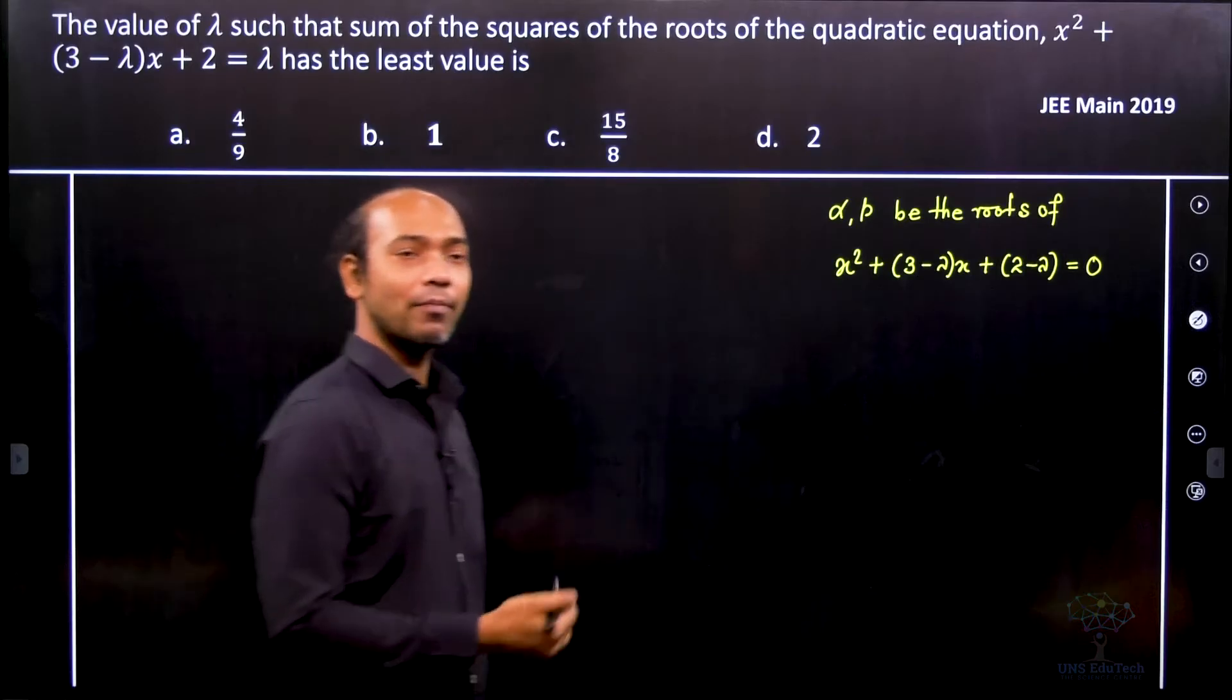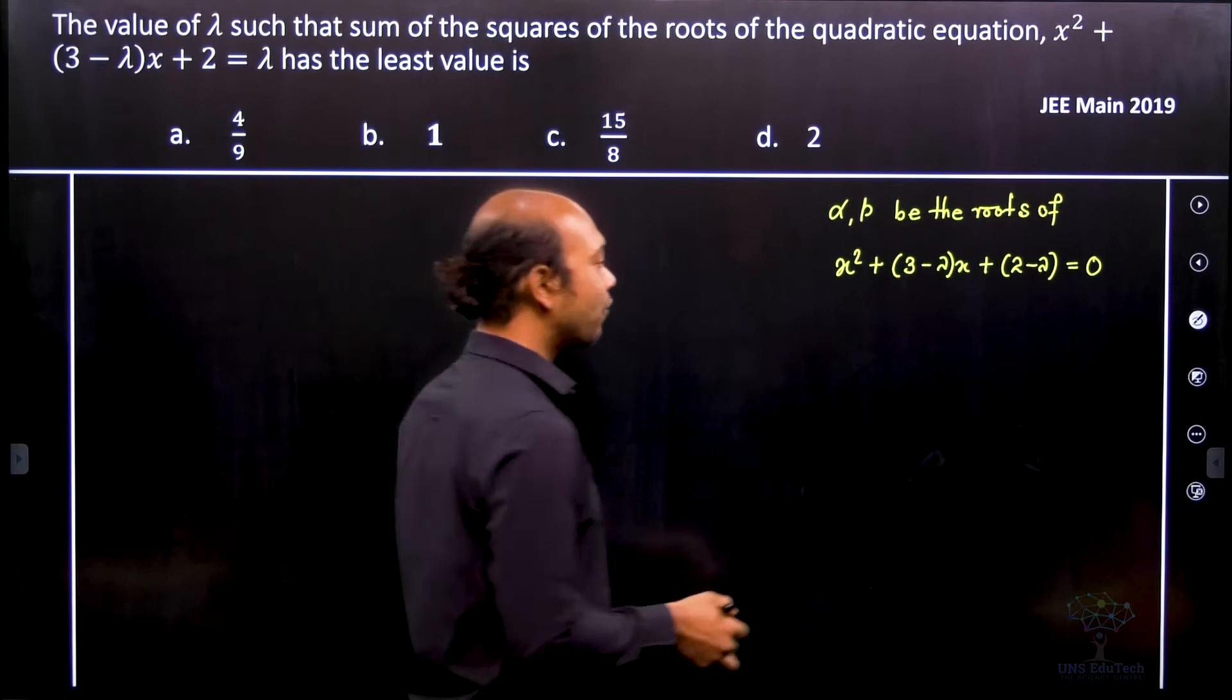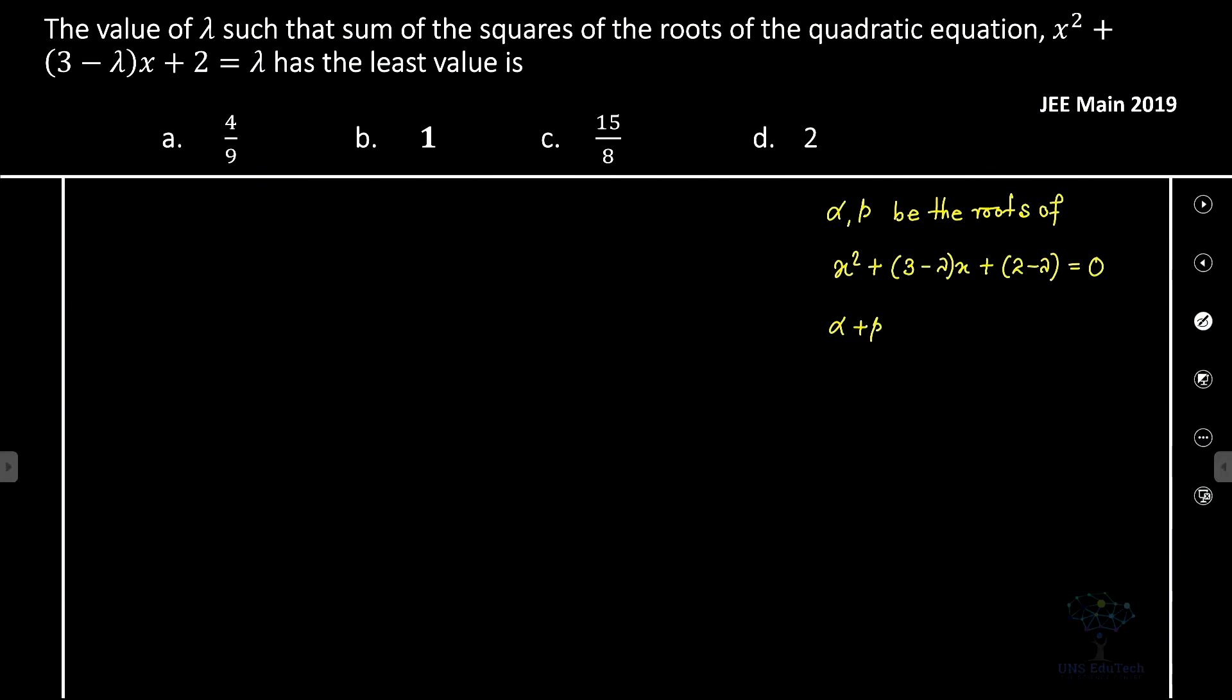Now we need to apply the sum of the roots and product of the roots. So therefore alpha plus beta is equal to minus 3 minus lambda, and the product of the roots alpha beta is 2 minus lambda, which is very straightforward.